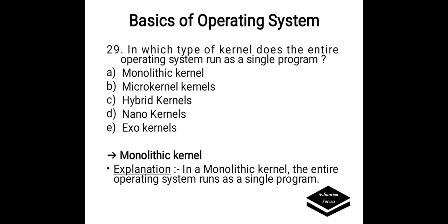In which type of kernel does the entire operating system run as a single program? Option A. Monolithic kernel, B. Micro kernel, C. Hybrid kernel, D. Nano kernel, E. Exo kernel. Correct answer is option A, Monolithic kernel. In a monolithic kernel, the entire operating system runs as a single program.